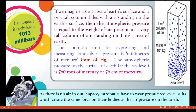If we imagine a unit area of earth's surface with one square metre, and a column of air extending from the surface of the earth to the top of the atmosphere, then the weight of air in that tall column equals the atmospheric pressure. The common unit for measuring atmospheric pressure is mm of Hg — Hg stands for Mercury. At sea level, atmospheric pressure is 760 mm of Hg or 76 cm of Hg. One atmosphere equals 1013 millibars.